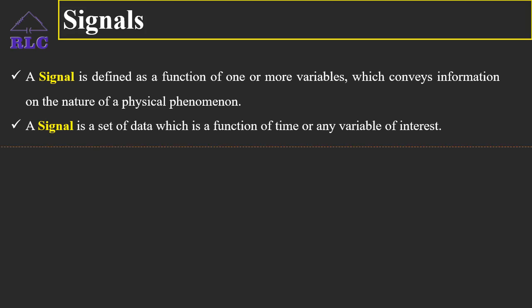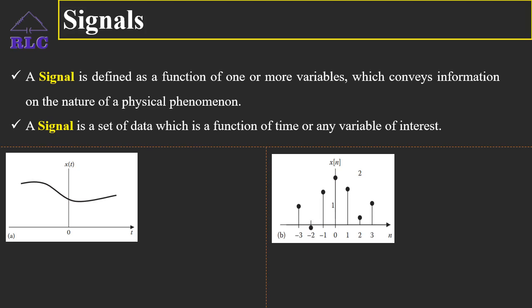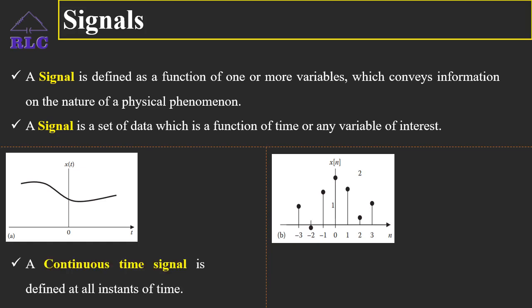Basically, there are two types of signals. One is continuous time signal and the other one is discrete time signal. A continuous time signal is defined at all instances of time. That is, x(t) — the value of signal x(t) exists for all values of t.